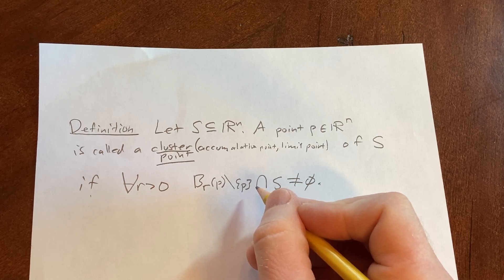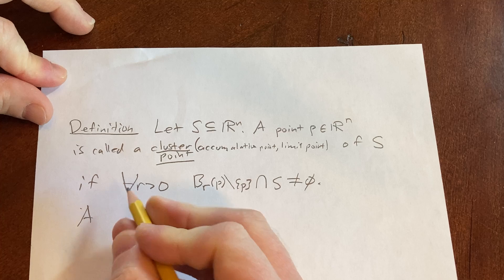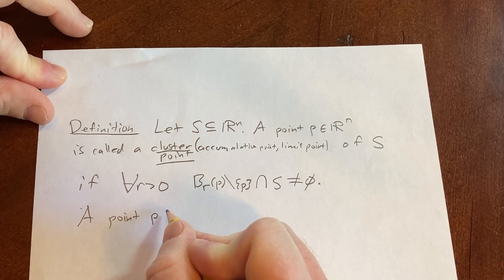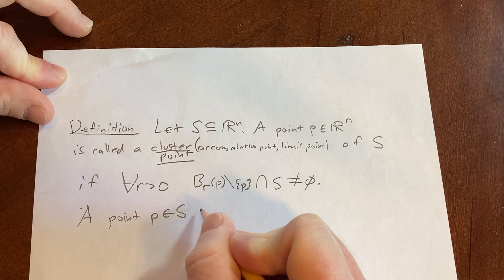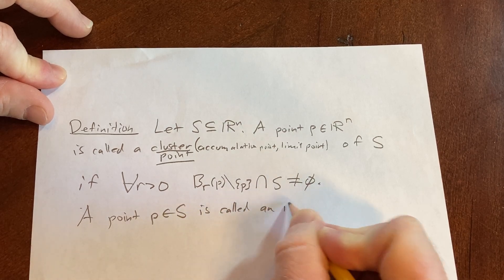Now we're going to define an isolated point. A point P in S is called an isolated point